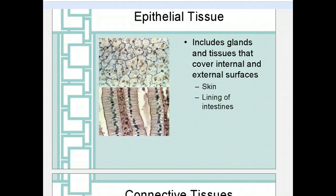Epithelial tissue is the tissue that covers parts of the body. This includes glands and all of the tissues that cover the internal and external surfaces of your body. Your skin is an example of epithelial tissue. The lining of your intestines and the lining of your stomach are also examples of epithelial tissue.